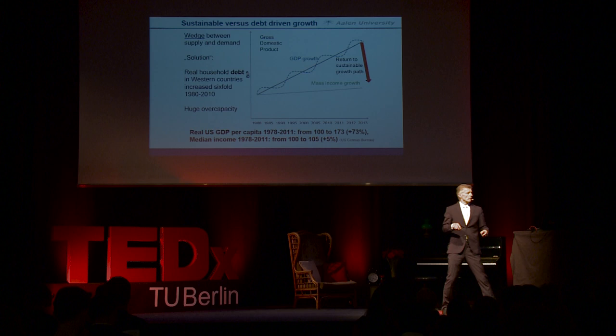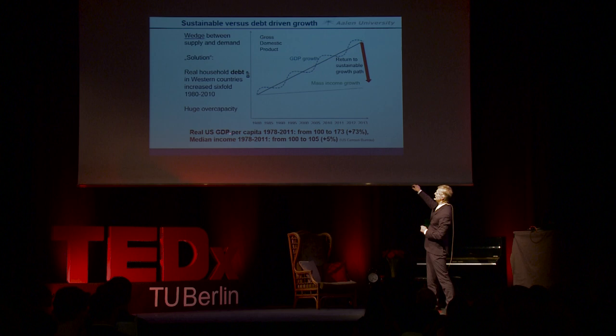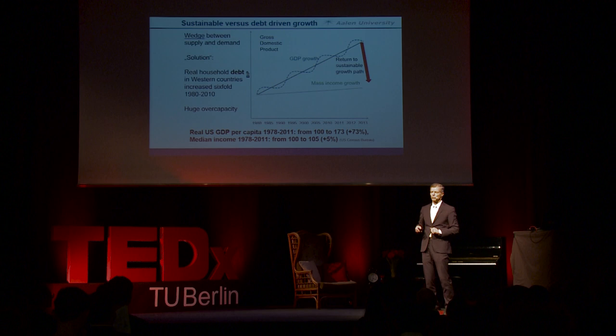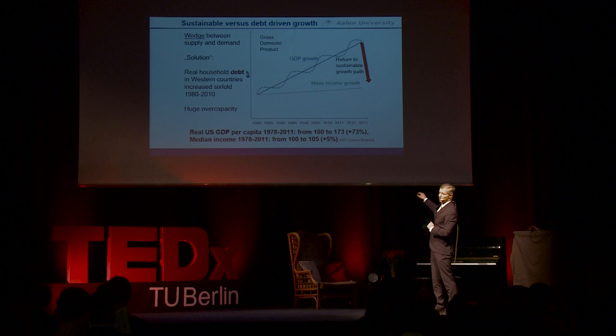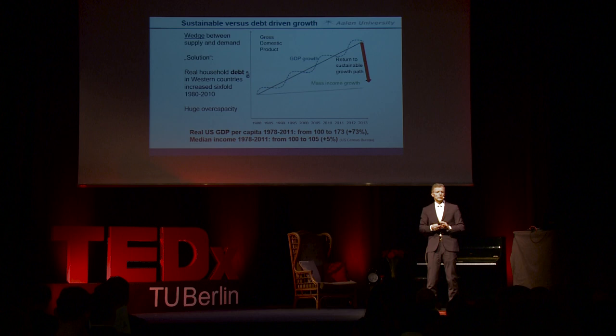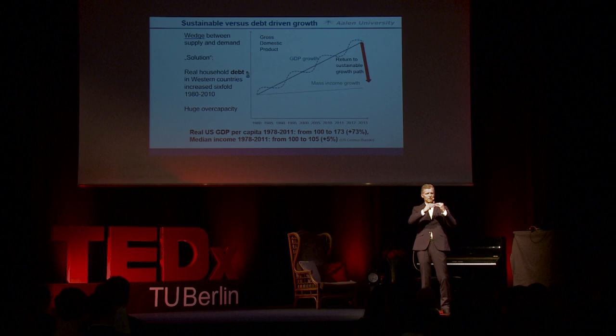Some numbers for the United States: from 1978 to 2011, real U.S. GDP increased from 100 to 173 after inflation — numbers from the Census Bureau. So we had really strong economic growth during these 33 years. During the same period, median income rose by just 5% after inflation. Median income is the income of people in the very middle of society, where half earns more and half earns less — an indicator for mass income. And for nearly 30 years, mass income nearly did not increase in the United States.